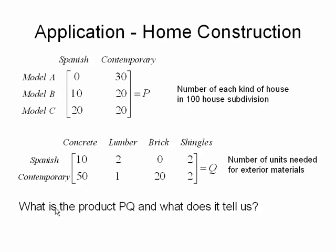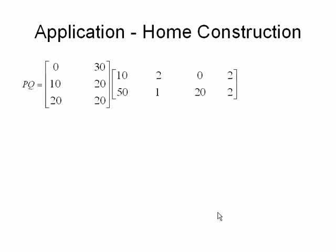If I take the product P times Q, what is it and what does that tell us? I've taken the matrix P, which is a 3 by 2 matrix, and multiplied it by a 2 by 4. So a 3 by 2 times a 2 by 4 means we're going to end up with a 3 by 4 as our final result.